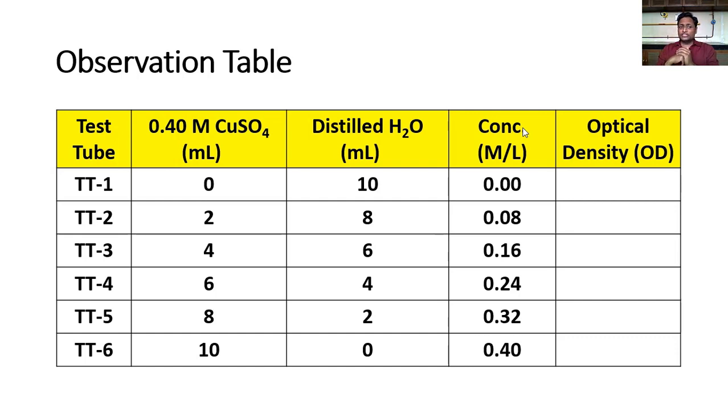In the first, which we are labeling as blank TT1, you see there is no copper sulfate added, we are taking 10 ml of distilled water. TT6 which will be purely stock solution, we are taking 10 ml of that and no distilled water is being added. TT2, you see 2 ml of copper sulfate, 8 ml of distilled water. TT3 is 4 ml of copper sulfate and 6 ml of distilled water. In the same fashion, we have tried to keep the total volume as 10 and we are increasing copper sulfate stock solution.